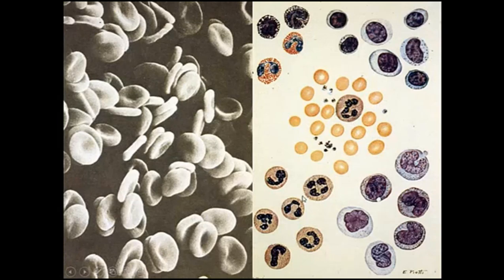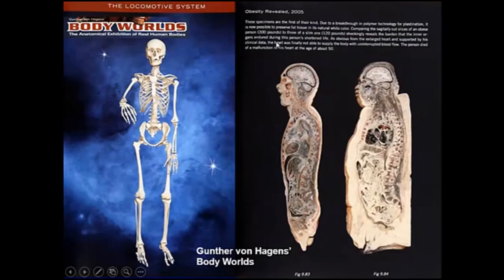The white blood cell types include neutrophils, monocytes — which give rise to macrophages — lymphocytes, eosinophils, and basophils.